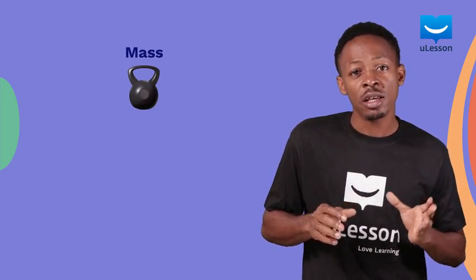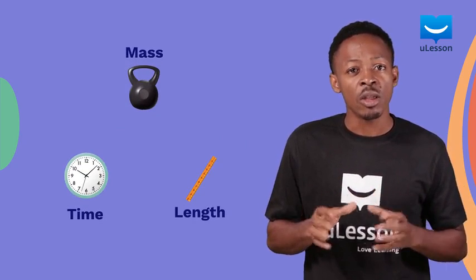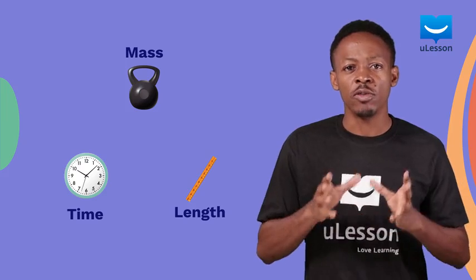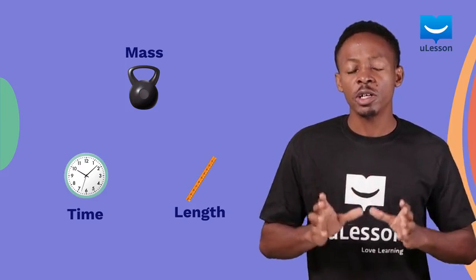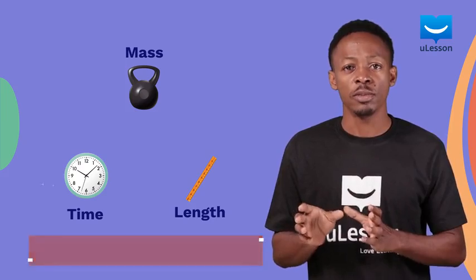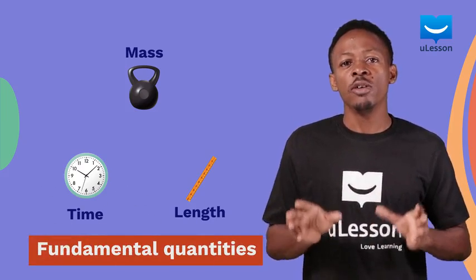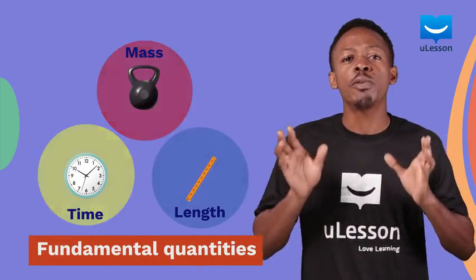Fundamental quantities such as mass, length and time are those that are independent of other quantities and are measured in base units. To use an analogy, fundamental quantities are like primary colors.